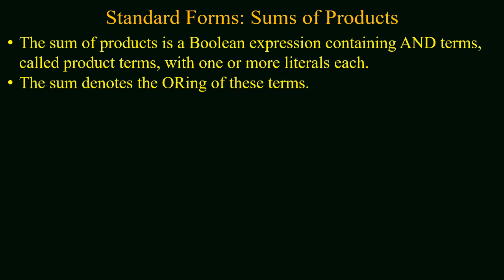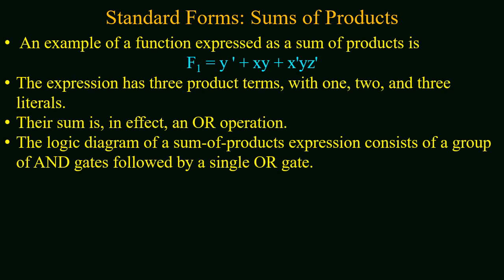The sum of product is a Boolean expression containing OR terms called product terms with one or more literals in each term, and all the product terms are added or ORed. An example of sum of product function is expressed as f1 equals y prime plus xy plus x prime yz prime. The overall function consists of three variables x, y, and z where the three product terms have one, two, and three literals. Their sum is in effect an OR operation.